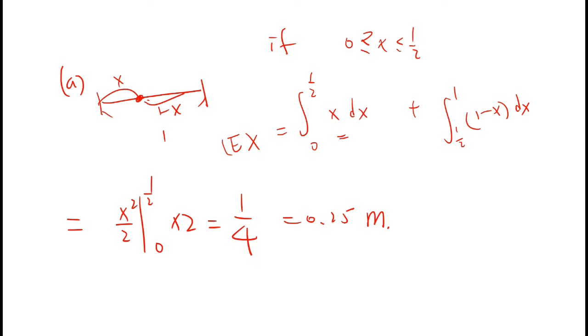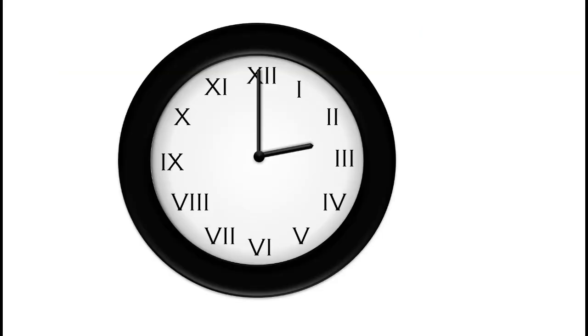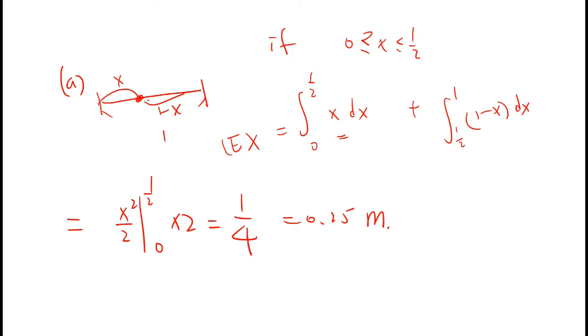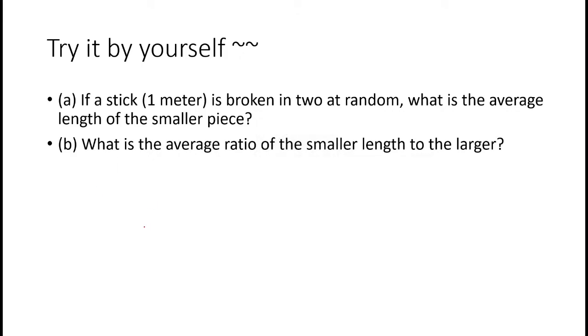Okay, so how about we solve B. What is the average of the smaller length to the larger? So suppose this is 1 minus x, this is x. Then if x is larger than half, this is larger, this is the smaller.